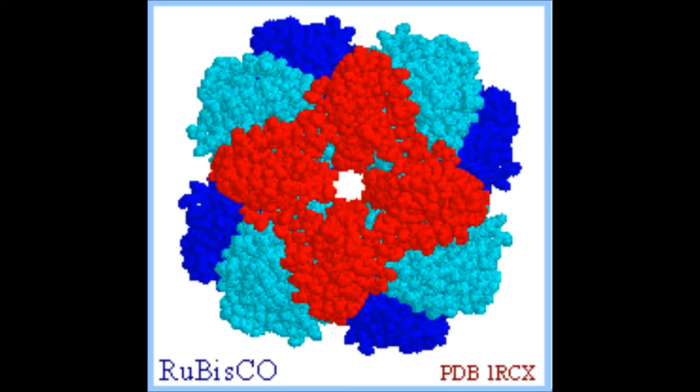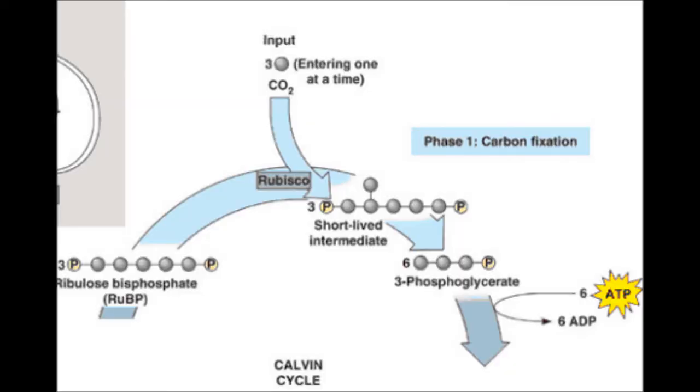Rubisco is an enzyme that combines carbon with a 5-carbon compound to create a 6-carbon molecule. In the Calvin cycle, 3 CO2 enters and combines with 3 RuBP creating a 6-carbon molecule. This 6-carbon molecule splits into two 3-carbon molecules and one phosphate molecule called phosphoglycerate, or PGA. We now have 6 PGA molecules.